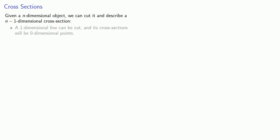Given an n-dimensional object, we can cut it and describe an n-minus-1-dimensional cross-section. For example, if you take a one-dimensional line, you can cut it, and its cross-sections will be zero-dimensional points. A two-dimensional figure can be cut, and its cross-sections will be one-dimensional lines.